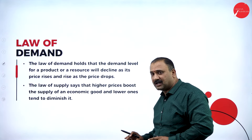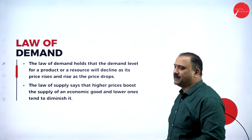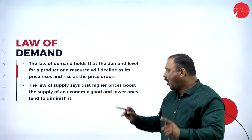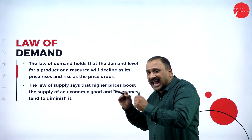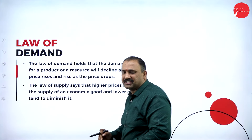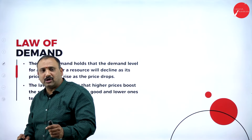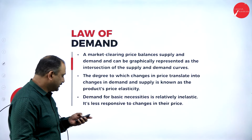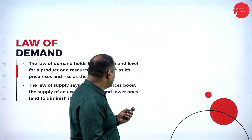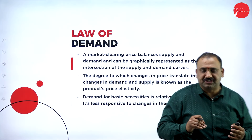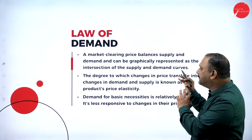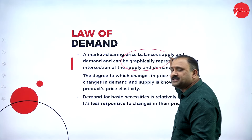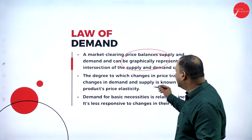The law of demand works in inverse, whereas the law of supply says that higher prices boost the supply of an economic good, and lower prices will diminish the supply. A market clearing price balances supply and demand, which can be graphically represented. The degree to which price changes translate into demand changes is known as the product's price elasticity.